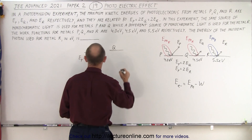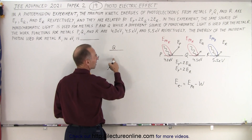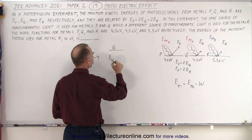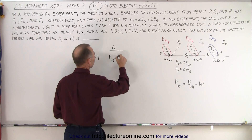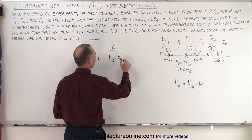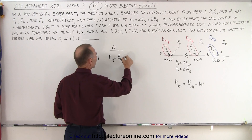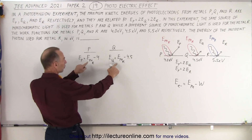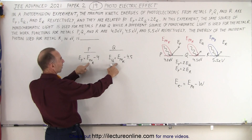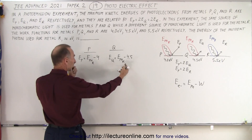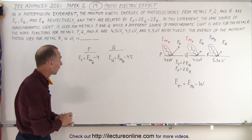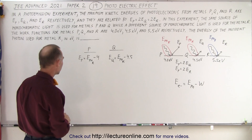For metal q, the energy of the outgoing electron E_q equals E_photon_red minus 4.5. Notice that both equations contain E_photon_red, so we can eliminate it by solving the two equations simultaneously.